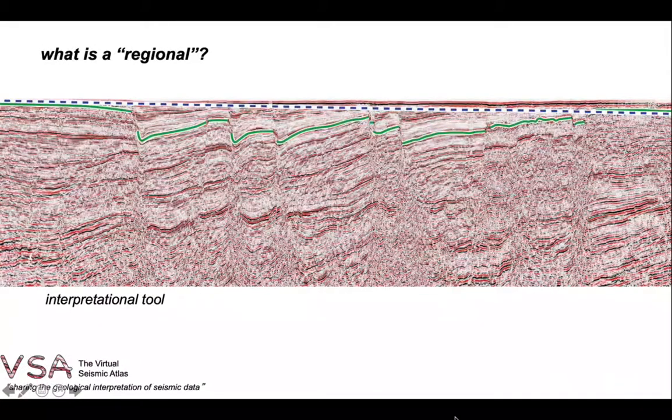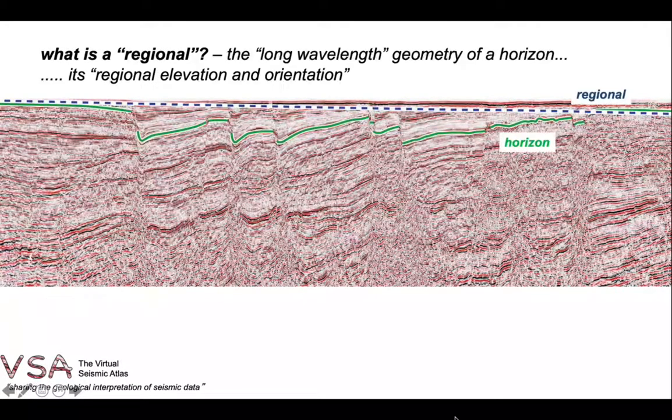Regionals are an interpretation tool. So what does this term mean? It's the long wavelength geometry of a horizon, and the term regional is shorthand for regional elevation and orientation. So on this seismic interpretation, we picked a green horizon through the data, and the pecked blue line predicts where this horizon started. So it's the regional for the green.